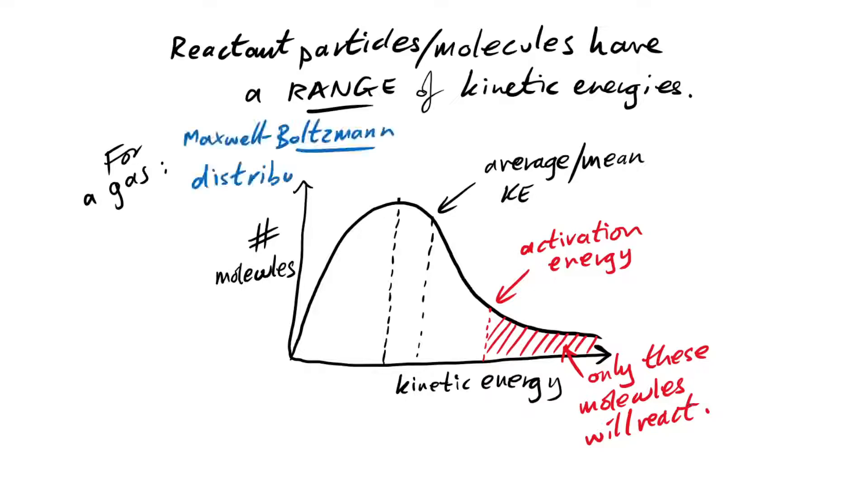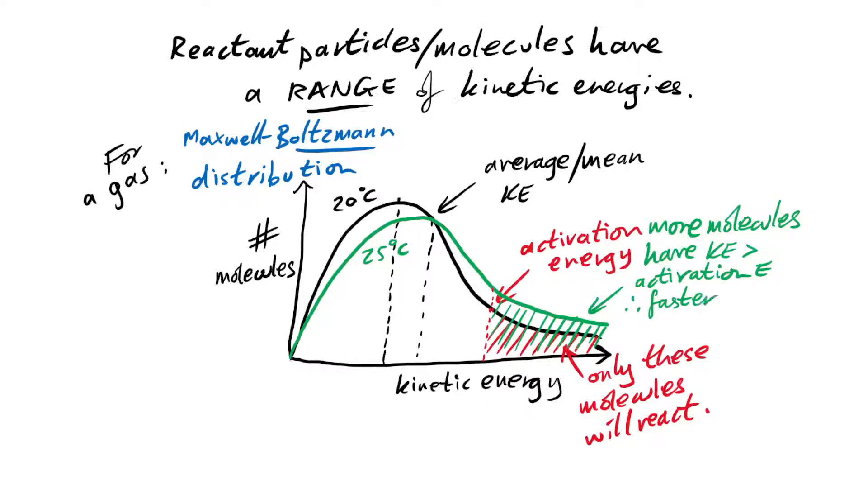We call this the Maxwell-Boltzmann distribution. Quite often, it's just shortened to the Boltzmann distribution. And what happens when we increase the temperature? Well, this distribution is going to change. It flattens a little bit, but that means that on the right-hand side, we have more molecules past the activation energy line. So that means more molecules have enough kinetic energy to react, so ultimately, we have a faster rate of reaction.